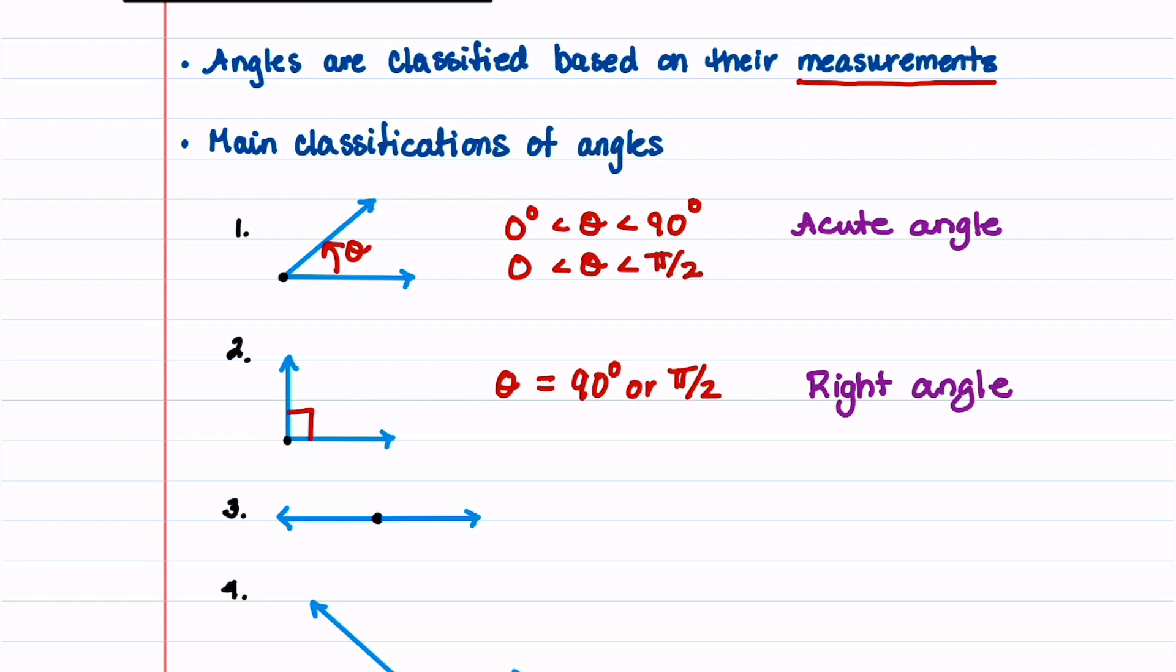This next angle is an angle where the measure going from the initial to the terminal is 180 degrees or pi radians. And this angle is called a straight angle. That one's probably the easiest one to remember.